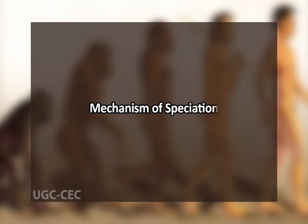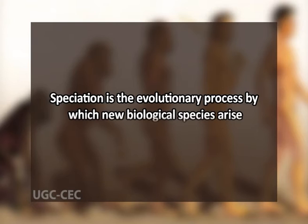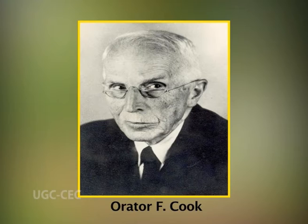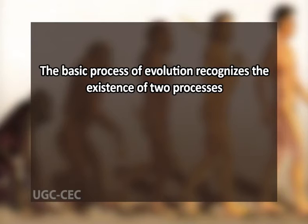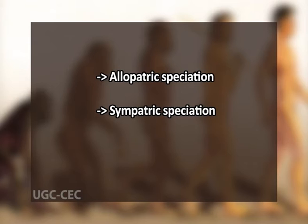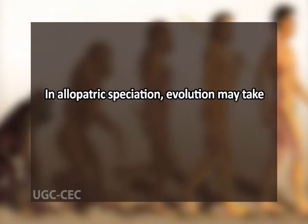Having understood the concepts of species, let's talk about the mechanisms of speciation. Speciation is the evolutionary process by which new biological species arise. Darwin called it specification; the term speciation was coined by Cook. The basic process of evolution recognizes two processes: anagenesis (phyletic change in the course of time) and cladogenesis or speciation (the origin of new species through splitting of pre-existing ones). The important modes of speciation are allopatric, sympatric, and parapatric speciation. In allopatric speciation — called geographical speciation by Mayr — evolution may take place in two spatially separated populations from a common ancestral population.